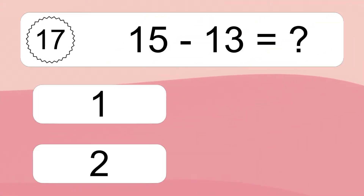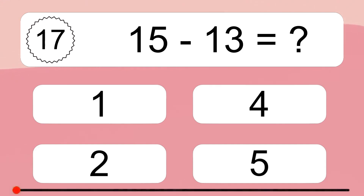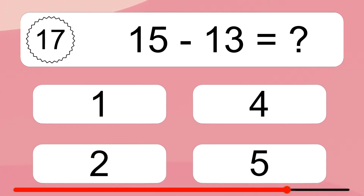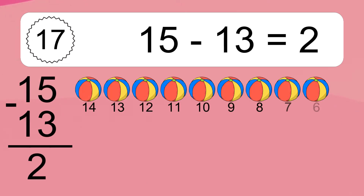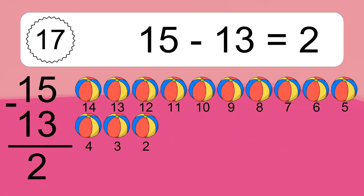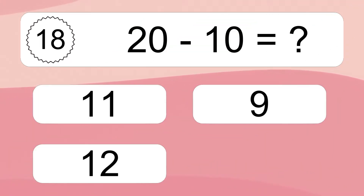15 minus 13 equals what? 15 minus 13 equals 2. Let's count it. 14, 13, 12, 11, 10, 9, 8, 7, 6, 5, 4, 3, 2.